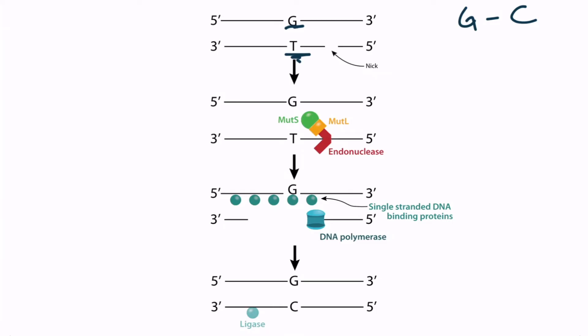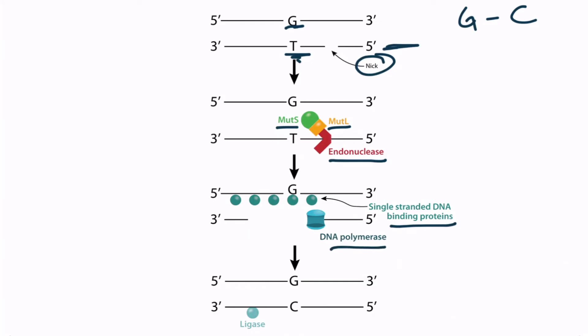During DNA replication, the daughter strand normally contains nicks, which distinguish it from the parent strand. Two proteins, MutS and MutL, slide along the daughter strand until they find the nicked region. They then recruit an endonuclease enzyme to the site, which cleaves the mismatched region of DNA. The gap region is stabilized with single-stranded DNA binding proteins. DNA polymerase fills in the empty space in the 5' to 3' direction, and ligase seals the nicked region so the DNA bases are now paired correctly.